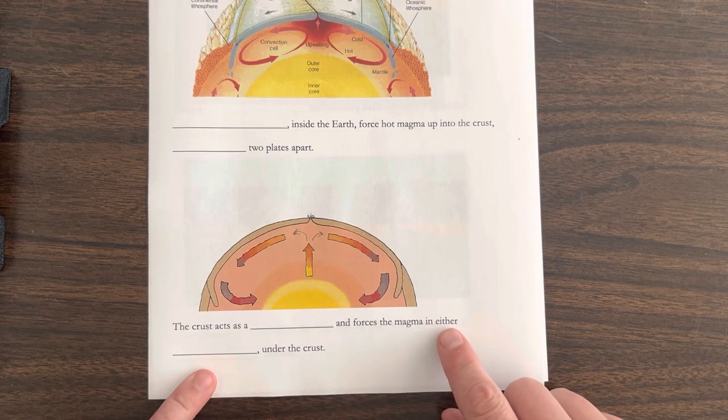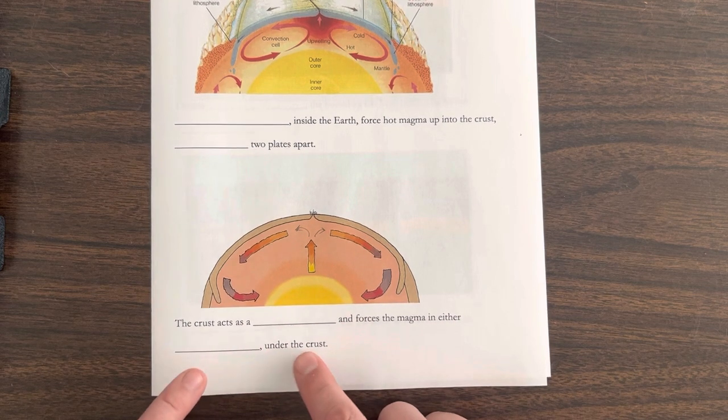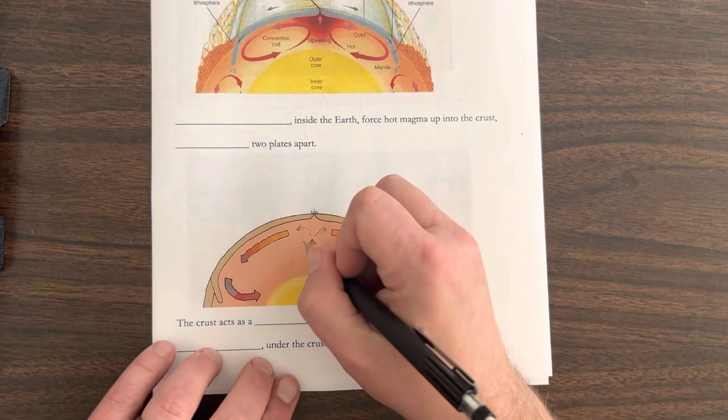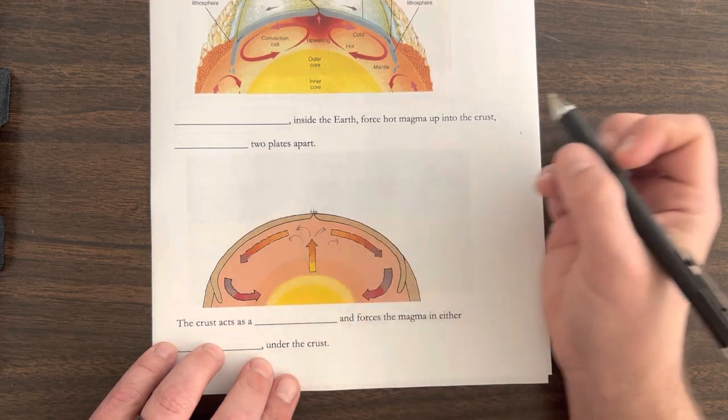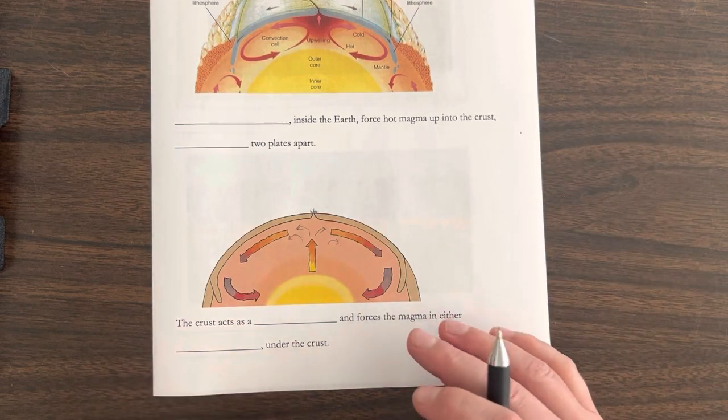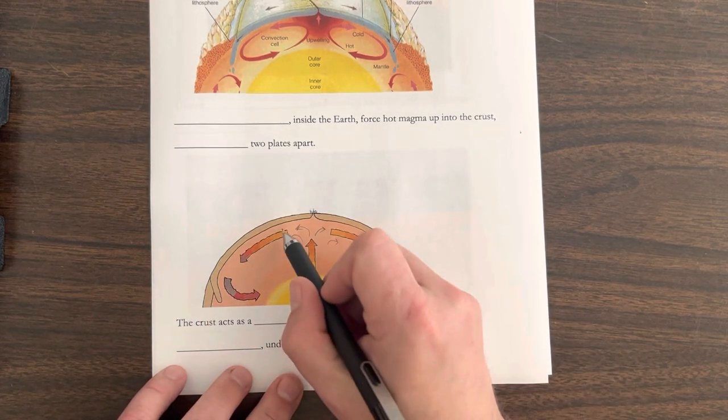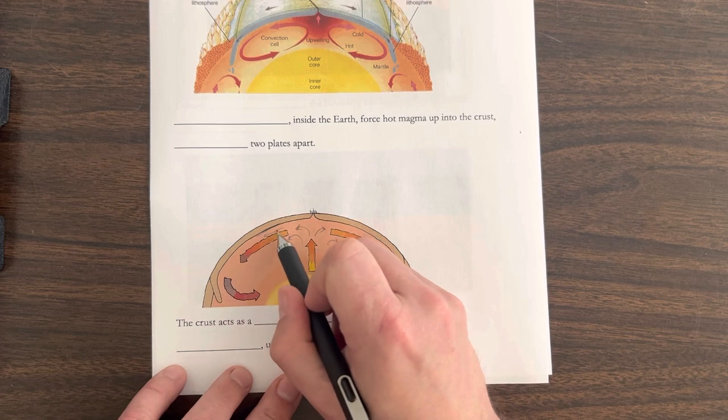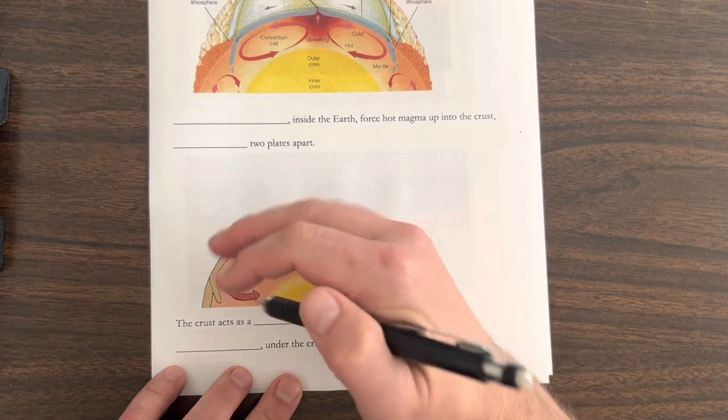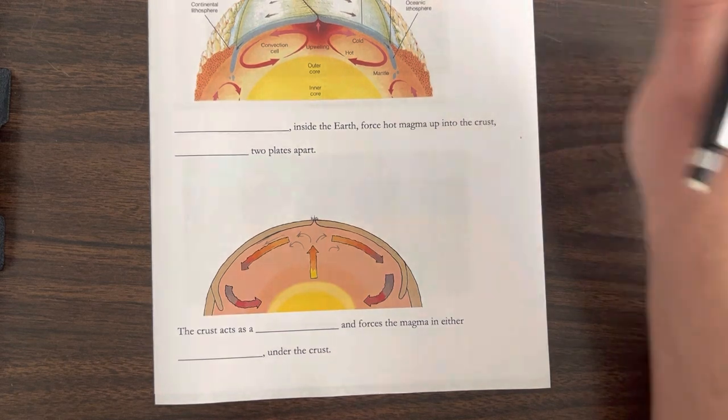So the forces of magma in either direction under the crust. And this is important, because the magma is flowing under the crust here. And as it does that, it's kind of dragging the plate along with it. So as that magma moves, there's friction between the crust and the magma, and it just drags that plate along with it.